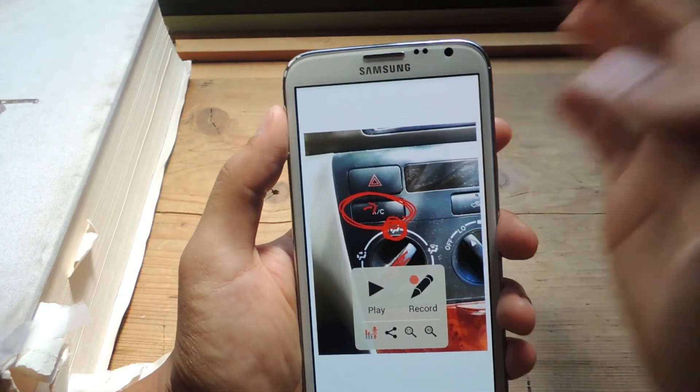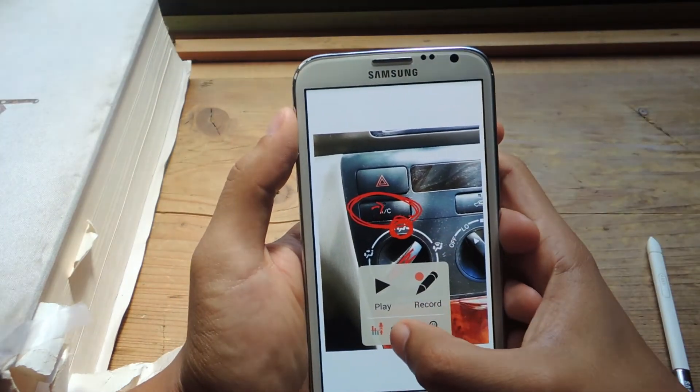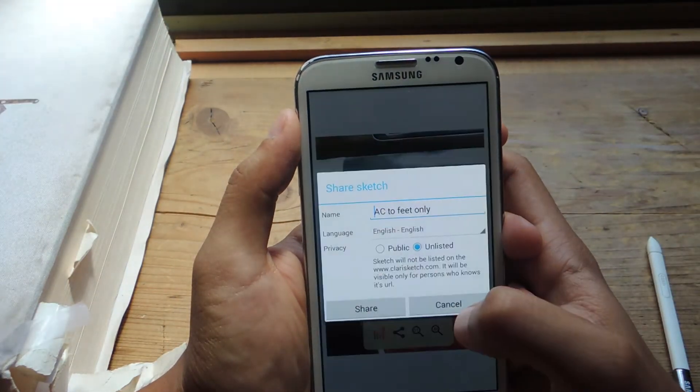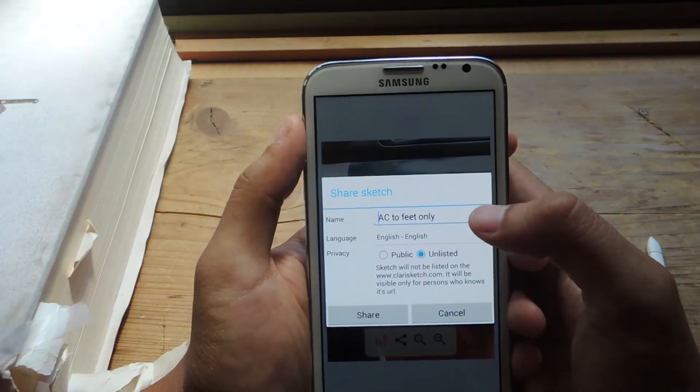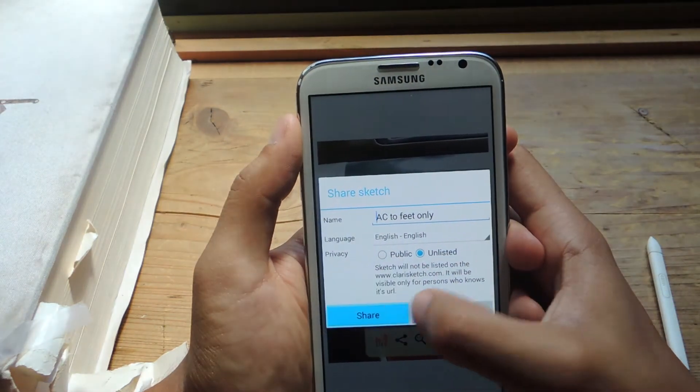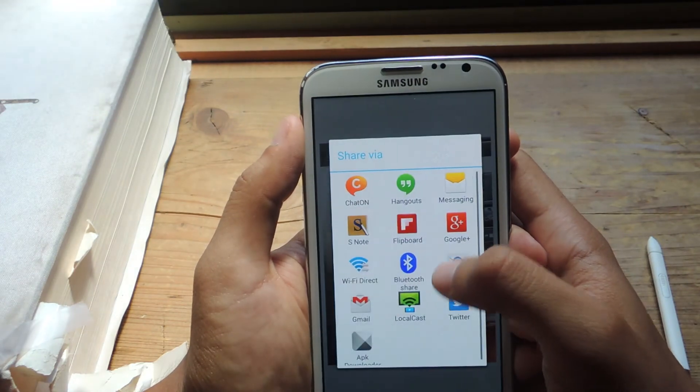And then if you want to share that to someone, they don't need this application. You can just share them a link. So I'll tap on share. And you name it. You can put it public or unlisted. So I'm just going to press share. It uploads to the server.